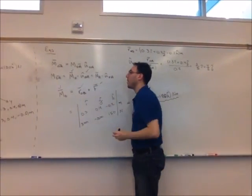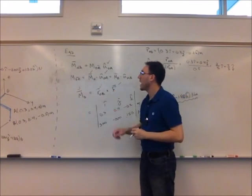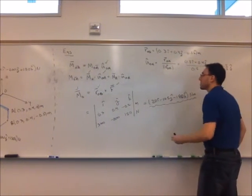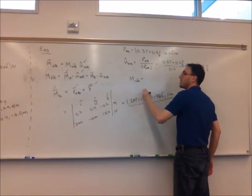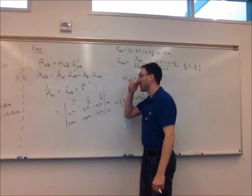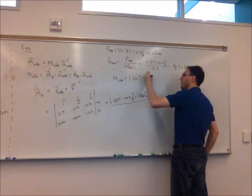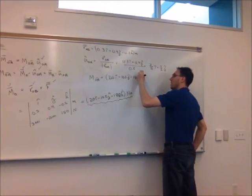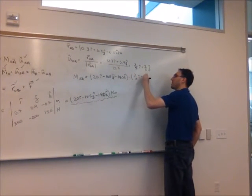So this is going to be 3 fifths i plus 4 fifths j. So u hat OA we know, which means we also know it up here. We know these two things so we can calculate the magnitude of the moment around axis OA. So that's going to be the moment, the vector moment around O dotted with u hat OA. So we have this information here. So 20i minus 105j minus 180k dot 3 fifths i plus 4 fifths j.